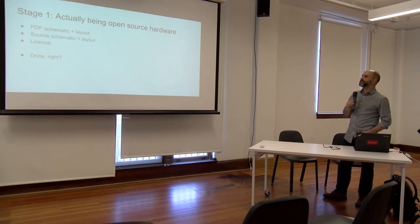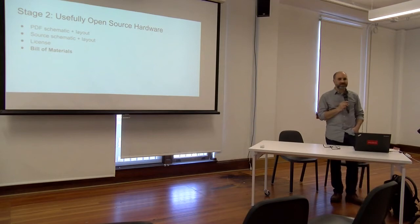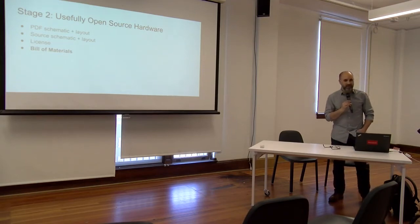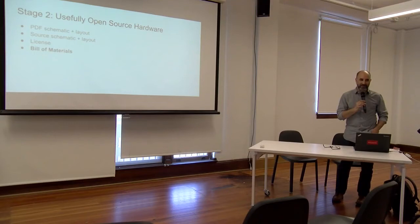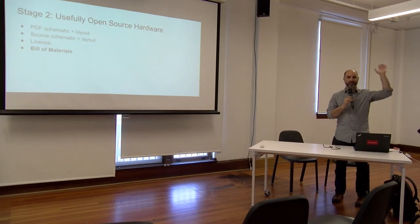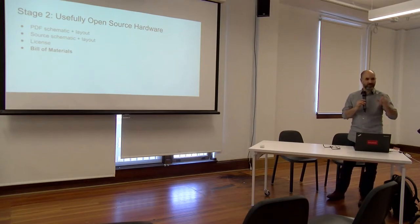So now: PDF schematic, source schematic and layout, license — but you're still a lazy jerk. The real thing you need next is your bill of materials. If you want someone to actually use or hack your open source thing, you need to tell them what U1 is. A 7805 on your schematic is not just a 7805 — it's a 7805-T6-6. And if it's that one, you need a low ESR on your caps or it's going to oscillate. That's why you have a bill of materials — you're specifying things.